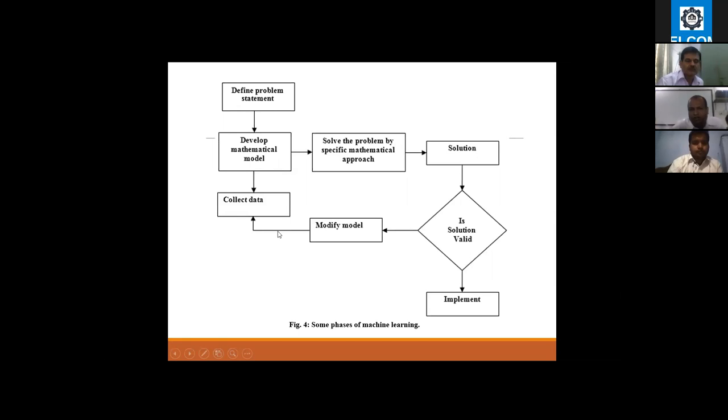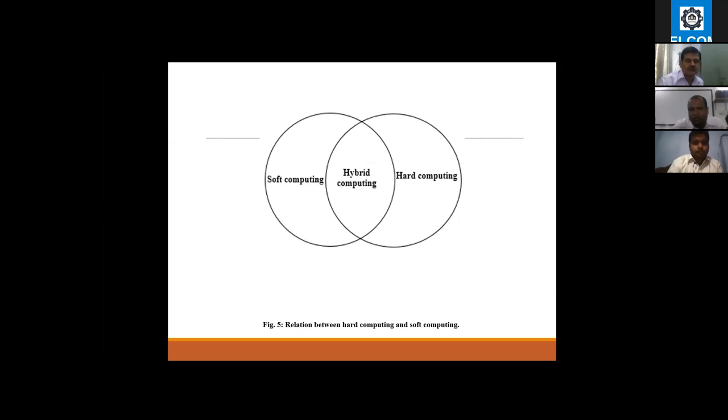There are some phases of machine learning. How to solve this problem? First, we have to define a problem with a statement, then develop a mathematical model related to data. In the duration of developing the mathematical model, we solve the problems using a specific mathematical approach, then find the solution and collect data from the given model. If this model is valid, then you implement it.